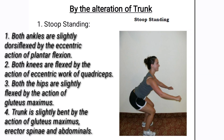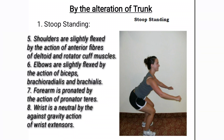The next position is by the alteration of trunk — tube standing. Here, both ankles are slightly dorsiflexed by the action of plantar flexors. Both knees are also flexed by the action of quadriceps muscle. Both hips are slightly flexed and the trunk is slightly bent by the action of gluteus maximus, erector spinae, other extensors of spine, and the abdominals.